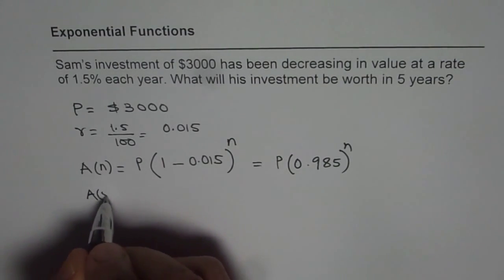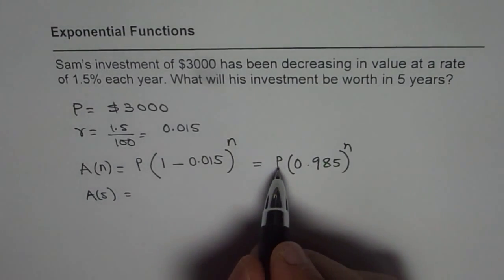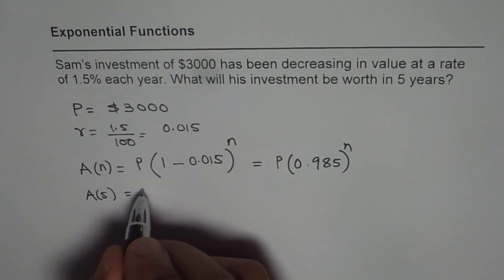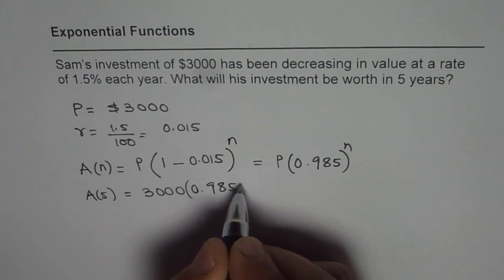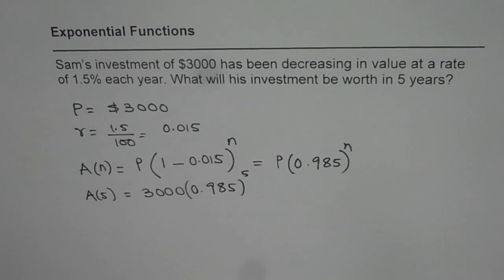Amount after 5 years equals the principal amount of 3,000 times 0.985 to the power of 5. We have 0.985 to the power of 5 and we will multiply that by 3,000 to get the answer.